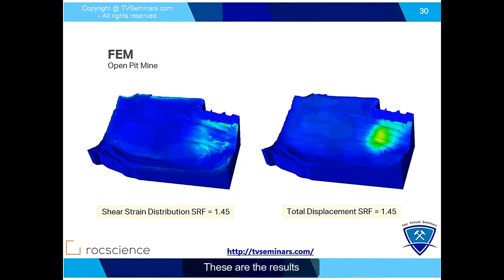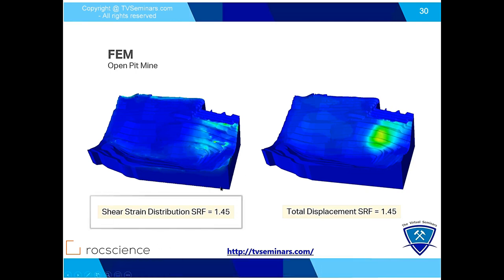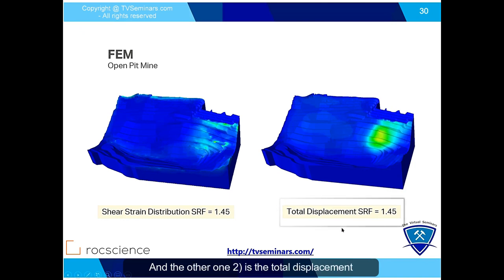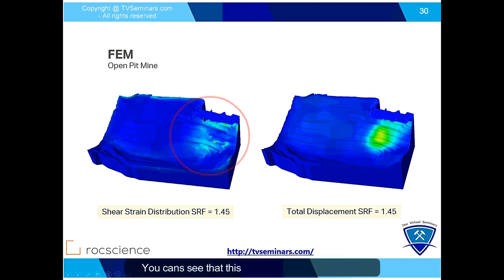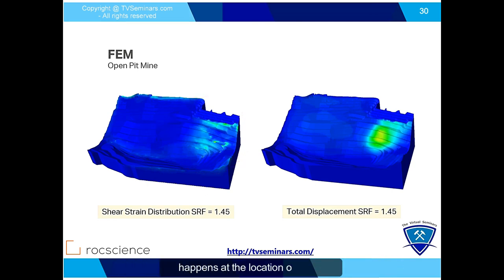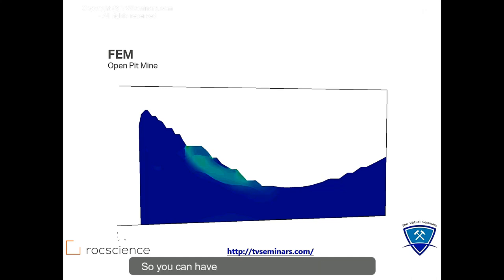These are the results in the finite element analysis. You can show the failure region using two parameters: one is the maximum shear strain and one is total displacement. Maximum shear strain indicates failure — the highest strain in your material. You can see that failure is happening in this region, and also the maximum displacement happens at the location of failure. A lot of practitioners are more comfortable with 2D results, so you have 2D cut sections in the 3D model.